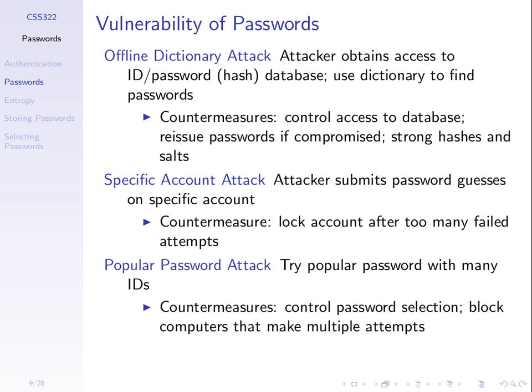What are the problems with these countermeasures? Controlling password selection too much — for example requiring 12 characters with 3 uppercase, 3 numbers, 3 lowercase, and 3 punctuation — makes it very hard to choose a password you can remember and type. If we control selection too much, passwords become inconvenient and users write them down or forget them. You need a trade-off between having some control over what they can select while giving enough freedom so they can choose a password that's easy to remember.